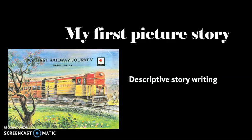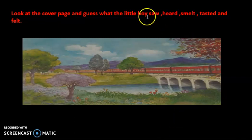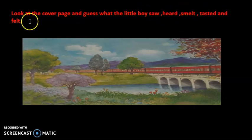So let's look at the picture. This is our cover picture which is also given in your textbook. It's a beautiful picture and there are so many things to write about. You need to write what the boy saw, what he heard, what he smelled, what he tasted, and what he felt. Remember, you are writing from the boy's perspective, so you can start with 'I'. Pause the video and think about what you are going to write. What is the little boy seeing? What did he hear, smell, taste, and feel?